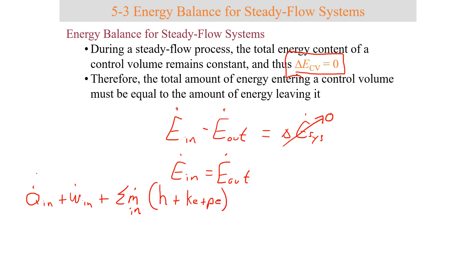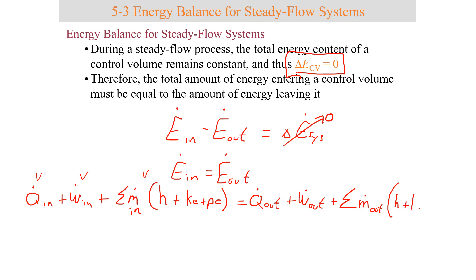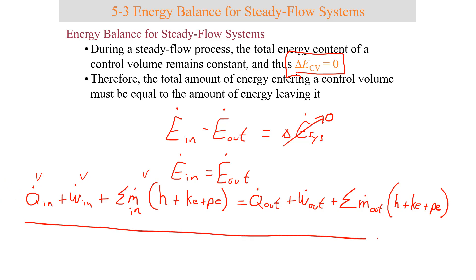So all energy in by heat, work, and mass has to equal all energy out. This means the sum total of all heat out, plus work out, plus the sum of all mass flow rates out multiplied by the energy each mass flow carries out — which includes enthalpy, kinetic energy, and potential energy. This equation is the basis for the first law analyses we'll be doing throughout this chapter.